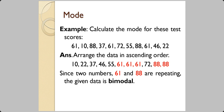In an example, arrange the data in ascending order. Values 10, 22, 37, 46, 55 do not repeat, but 61 repeats twice and 88 repeats twice. Because two numbers repeat, this distribution is bimodal. If three numbers repeated it would be trimodal; if more repeat it is multimodal. If no number repeats at all, it is a unimodal representation.